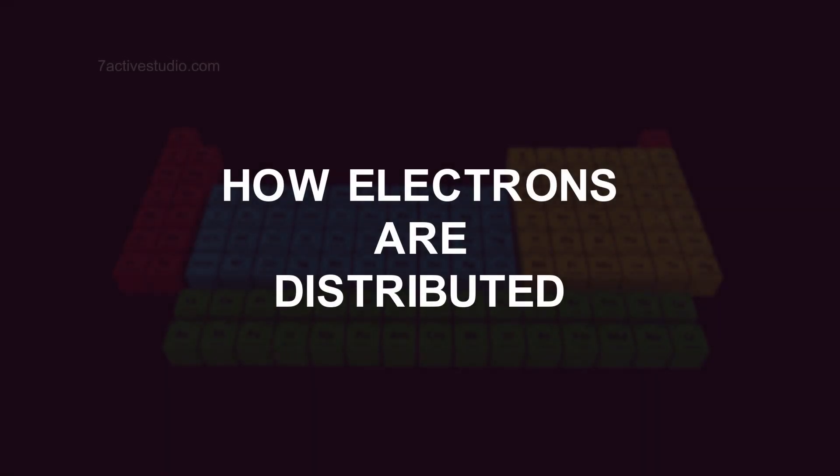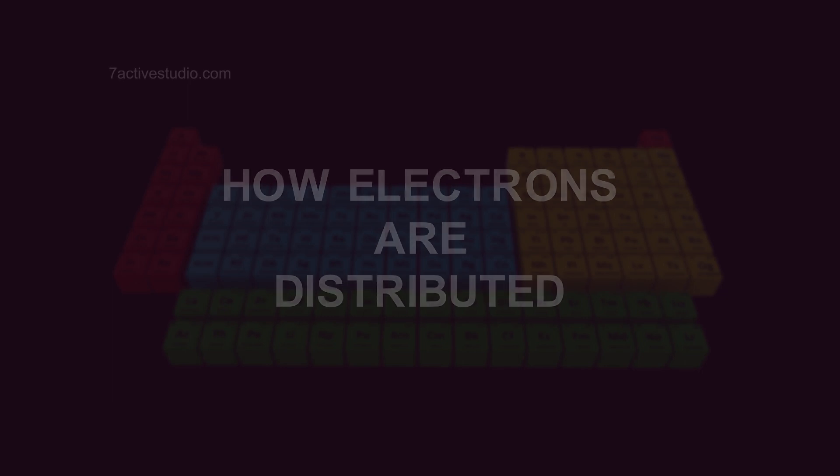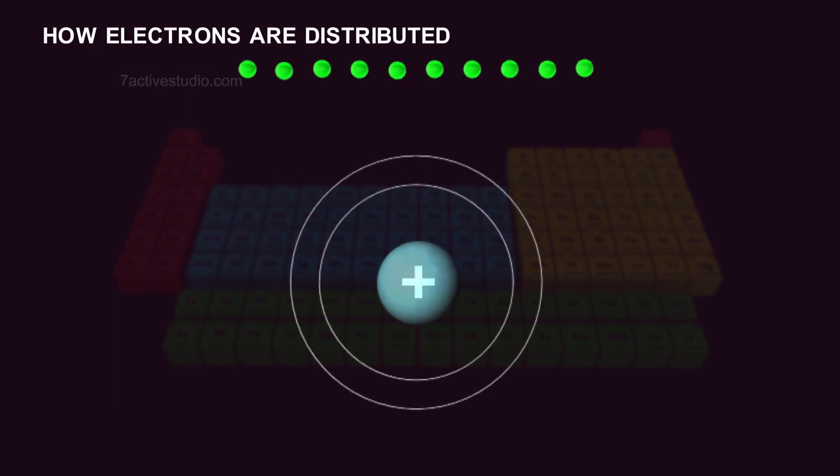How Electrons Are Distributed. The scientists Bohr and Burry had suggested that the distribution of electrons takes place into different orbits of an atom.